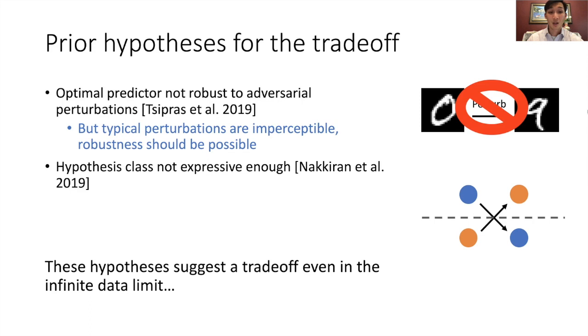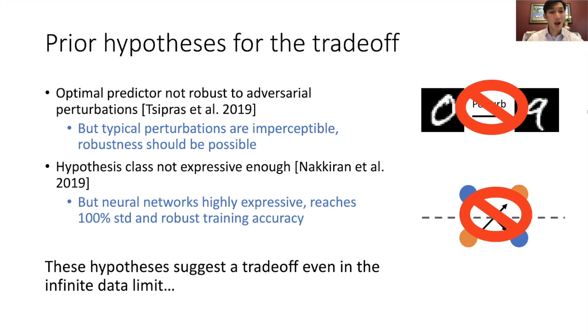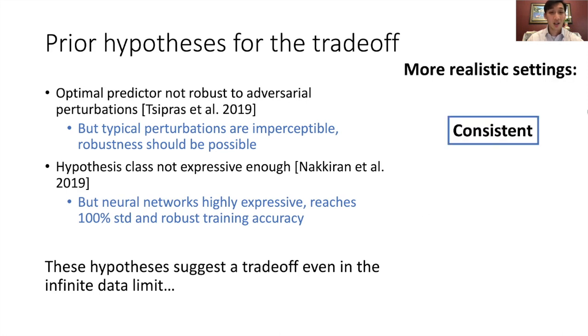However, typical perturbations are chosen to be imperceptible, so that robustness should be possible. And we typically use highly expressive neural networks that reach 100% standard and robust accuracy on tasks like CIFAR. Thus, we assume a more realistic setting, where the perturbations are consistent, meaning that they cannot change the true target or the label. We also assume that the model family is well-specified.